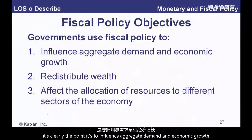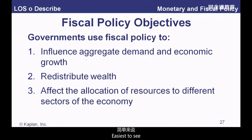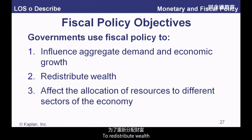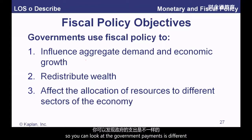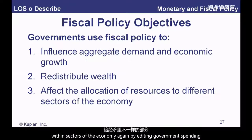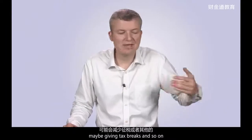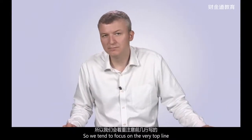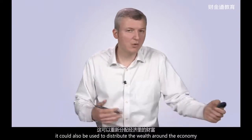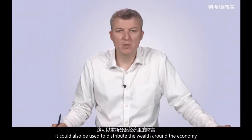The objectives of fiscal policy: clearly, the point is to influence aggregate demand and economic growth — C plus I plus G plus X minus M. To redistribute wealth, looking at government payments to different consumers within the economy. And to affect the allocation of resources within sectors of the economy, by dictating government spending, giving tax breaks, and so on. Bear in mind it can also be used to redistribute wealth around the economy.